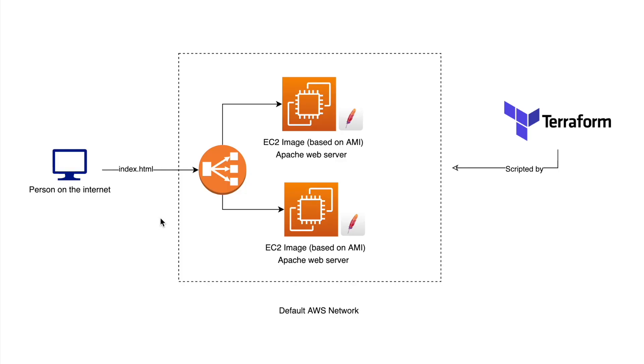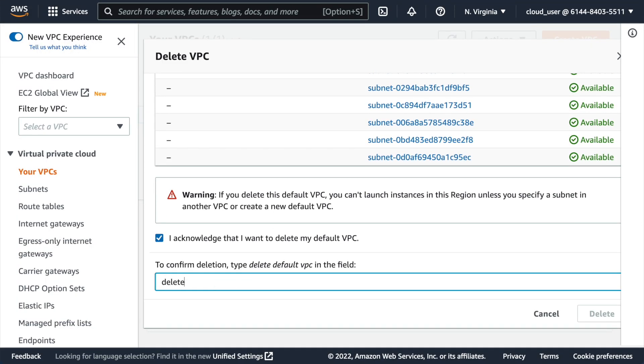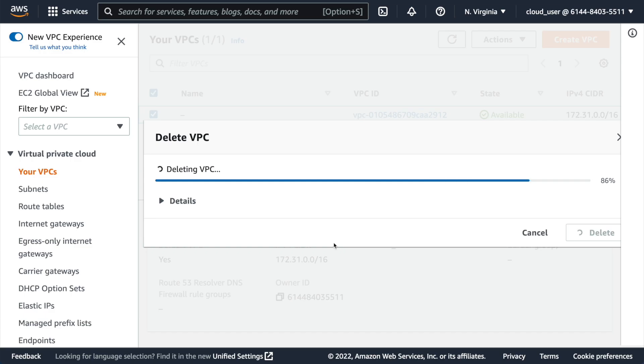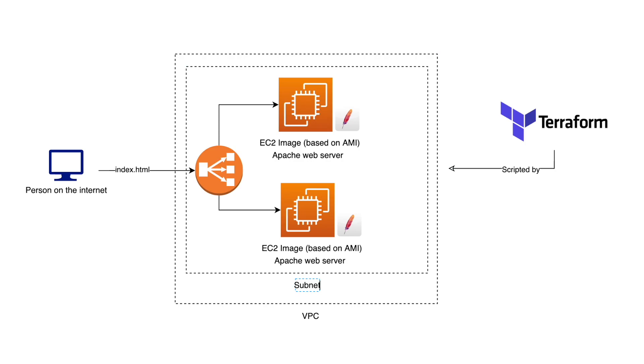At this point you have two instances running in Amazon's default created network. But the whole idea of this challenge is to understand how networks work, so you're going to delete those default networks and shift your instances into custom-made ones. This means you'll need to look into VPCs, subnets, IP addresses, and all of that — it may take some time to wrap your head around, but it's a huge advantage.